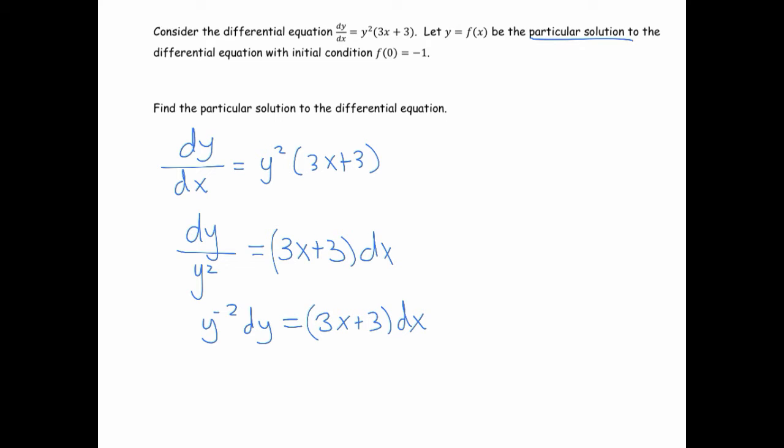So the antiderivative of both sides gives us the antiderivative of y to the negative 2. Again, add 1 to the exponent and then you got to kill off the negative that would result if you took that derivative with a negative in front. And then the right side would be x squared, and then I would need a 3 halves here, plus 3x plus c.